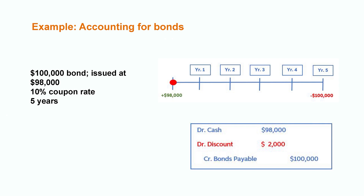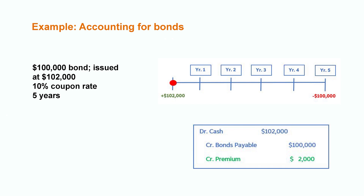Now let's round this all out by seeing what this looks like when the company issues the bond at a premium. In this example, the company decides to issue the bond at 102% of its base value. Here you can see that since we're charging investors a $2,000 premium, we're now receiving $102,000 in cash, but we're only required to pay the $100,000 face value back at the end of the five years. We now have an extra $2,000 premium in our pocket. The accounting transaction would show an increase to cash of $102,000 and record the $2,000 premium to offset the difference with that $100,000 bonds payable. This gives us a clear picture of the impact to a company's financial records with the issuance of bonds at either par, a discount, or a premium.